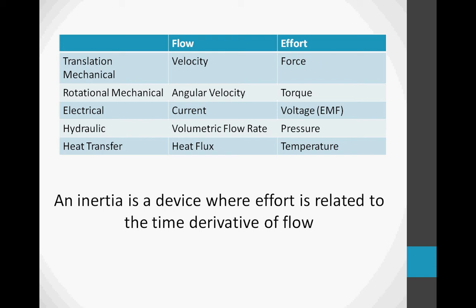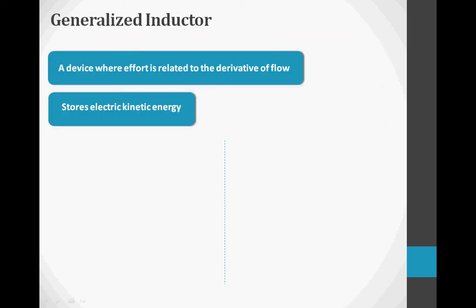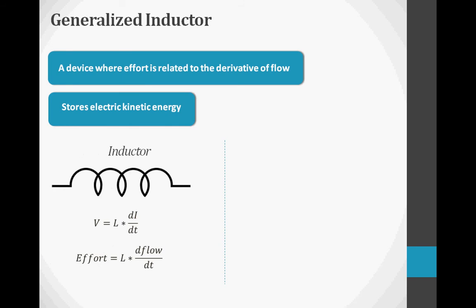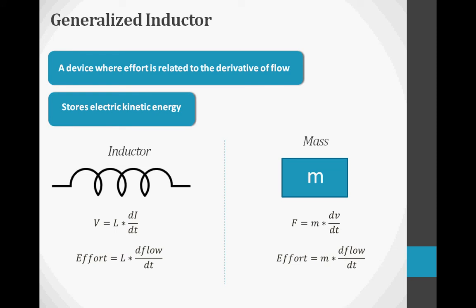Each one of these systems has generalized components that can be carried over from dynamic system to dynamic system. A generalized inductor is a device where effort is related to the derivative of flow, and it stores kinetic energy. In an electrical system, the generalized inductor is an inductor — the derivative of the flow variable, current, is proportional to voltage. In a translational mechanical system, the generalized inductor is a mass — the derivative of the flow variable, velocity, is proportional to force.